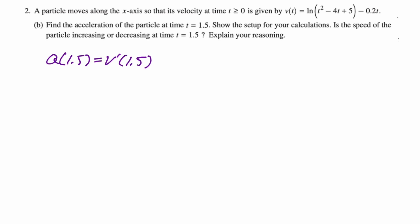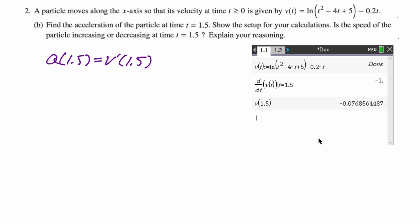So I use the calculator. I defined v of t. I found the derivative at 1.5, and I got exactly negative 1, which was kind of surprising. I also know for the next part I'm going to need v of 1.5, so I just found it while I was there. So v prime of 1.5 is negative 1. That's our acceleration.